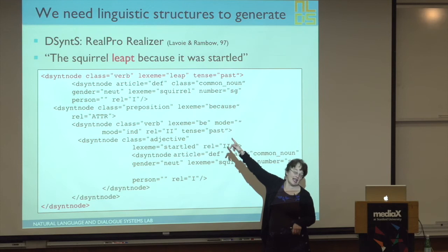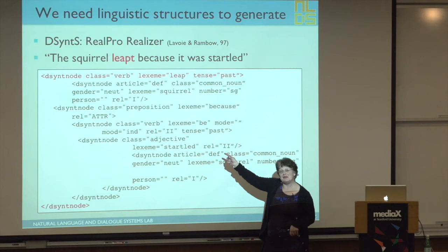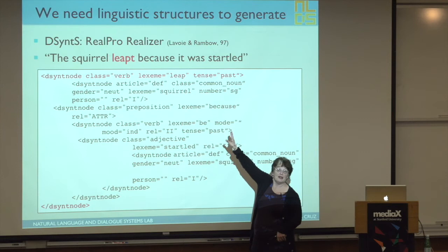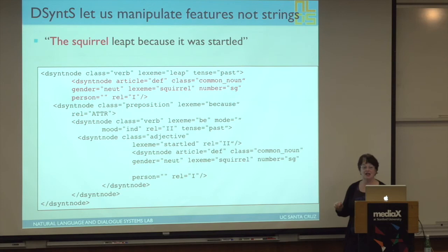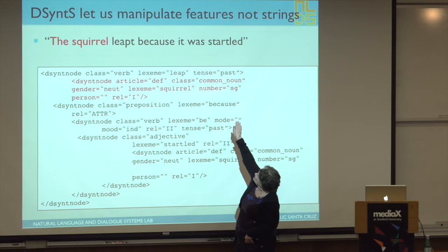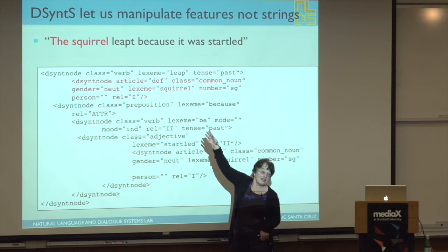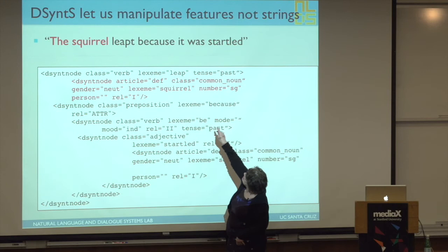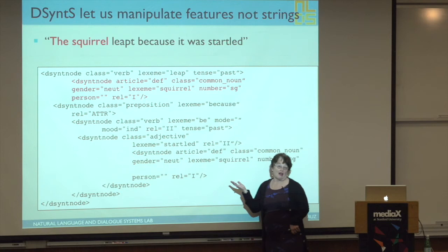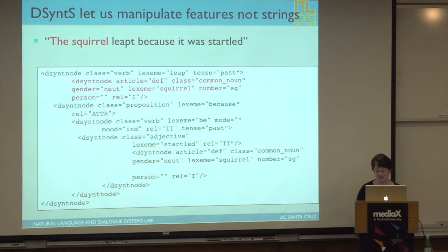For the squirrel, we have lexeme 'squirrel,' it's singular, it's definite. If for some reason there was more than one squirrel, we'd just say it's plural. If we wanted 'a squirrel,' we'd change the article value from definite to indefinite and automatically get the right thing generated without string manipulations. For our point-of-view parameter, we have 'the squirrel leapt' with person unspecified. When we want it to be first person, all we do is add the feature 'person is first' to the underlying representation and we get 'I leapt.'